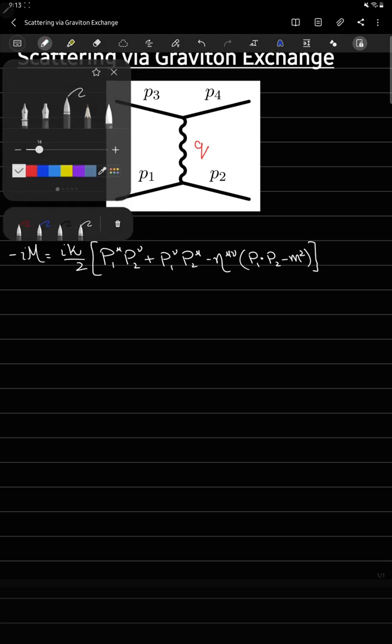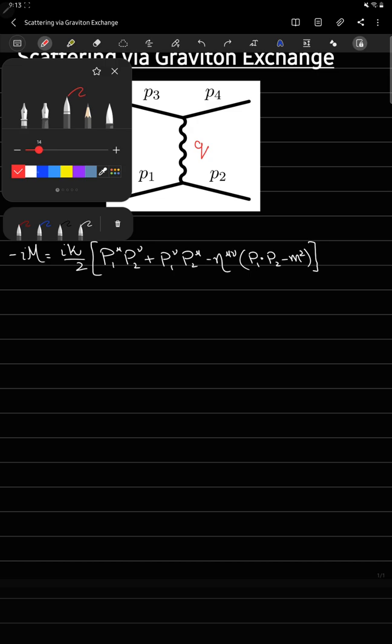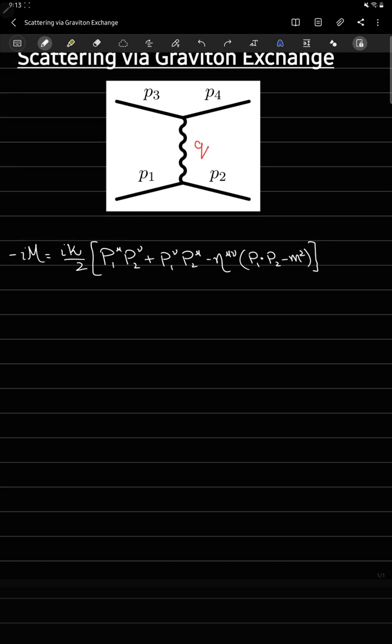This is for this vertex where you see p1 and p2 coming in. Now, for this exchange of this graviton, we have from our Feynman rules iota over q squared and this tensor P mu nu alpha beta, that's your graviton propagator.